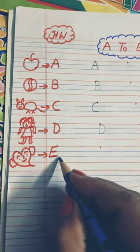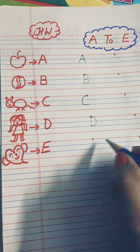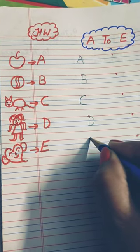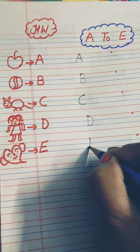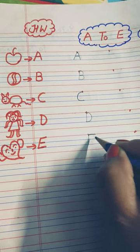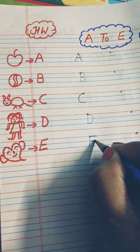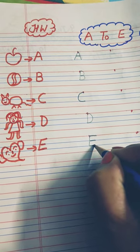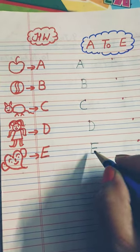Next, E, elephant. How do we write this? Single dot. First, standing line, then slipping line, then slipping line, then slipping line. E, elephant.